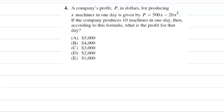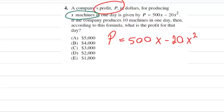Be careful not to think that P stands for producing because they're telling you that P is the profit. The profit is 500x minus 20x squared. And they're also telling us that X is the number of machines. So 10 machines means that 10 goes in for our X, and everything else stays the same.